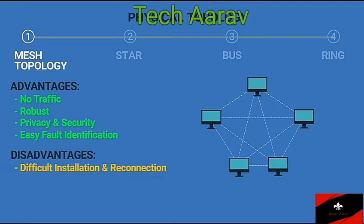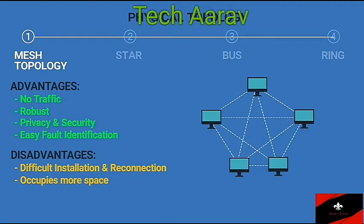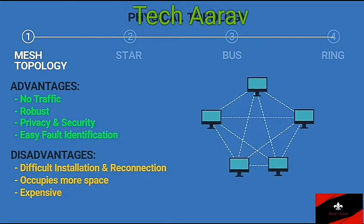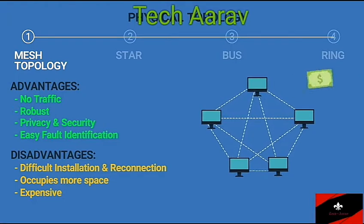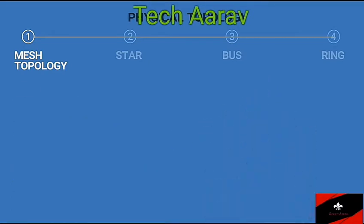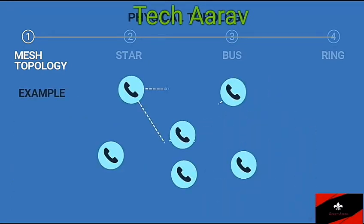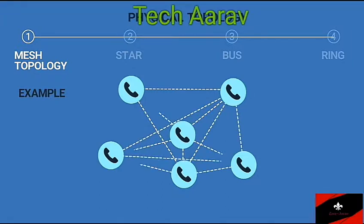Disadvantages: Installation and reconnection are difficult because all devices must be connected to one another. The bulk of the wiring occupies the available space. The hardware required to connect each link — I/O ports and cable — can be expensive. One practical example of a mesh topology is the connection of regional telephone offices, where each regional office needs to be connected to every other regional office.